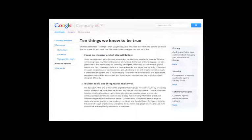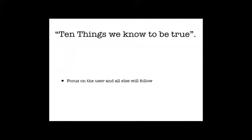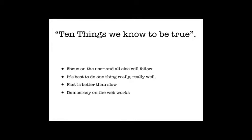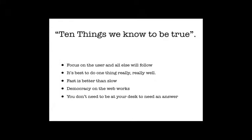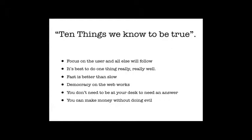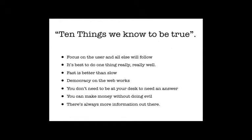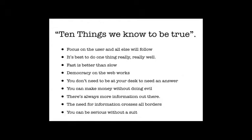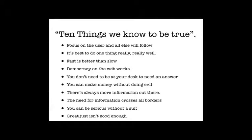Google has since 1995 these 10 things they know to be true. Some of them are great and can apply to libraries, and some outline the differences we have. First thing: focus on the user and all else will follow. It's best to do one thing really, really well. Fast is better than slow. Democracy on the web works. You don't need to be at your desk to need an answer. You can make money without doing evil. There's always more information out there. The need for information crosses all borders. You can be serious without a suit. And great just isn't good enough.